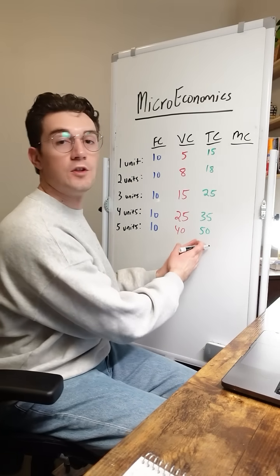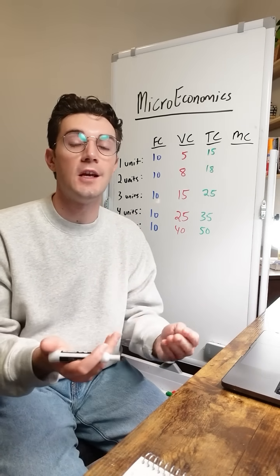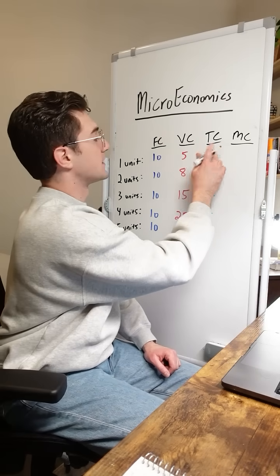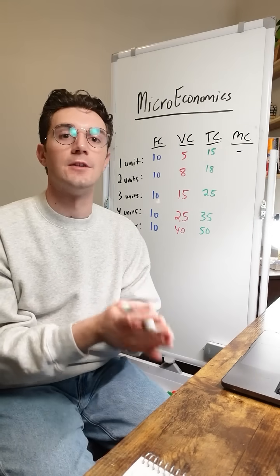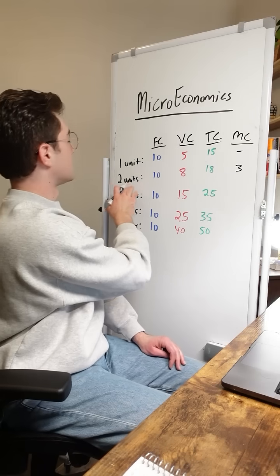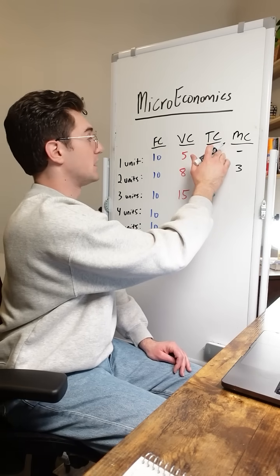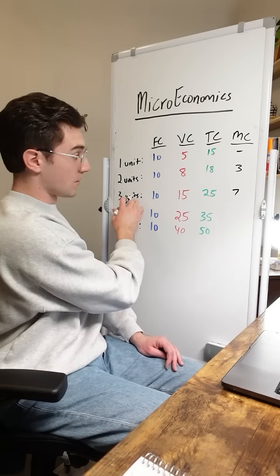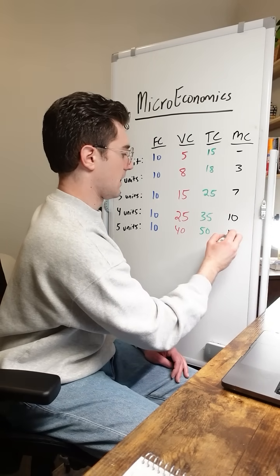Marginal cost — we just need to zone in on the total cost column, because all marginal cost is, is the change in total cost. How much did a given unit add to total cost? We're going to skip over the first unit here because there's not a previous total cost to compare it to. But the second unit: 18 minus 15 is three bucks — this second unit added $3 to our total cost, going from 15 at one unit to 18 at two. The third unit: 25 minus 18 is seven, so the third unit added $7 to our total cost. And the fourth added $10 and the fifth added $15.